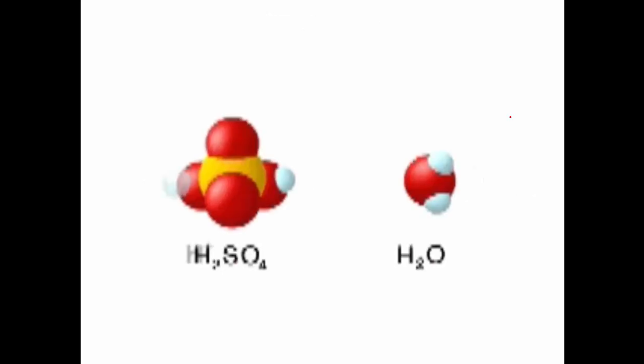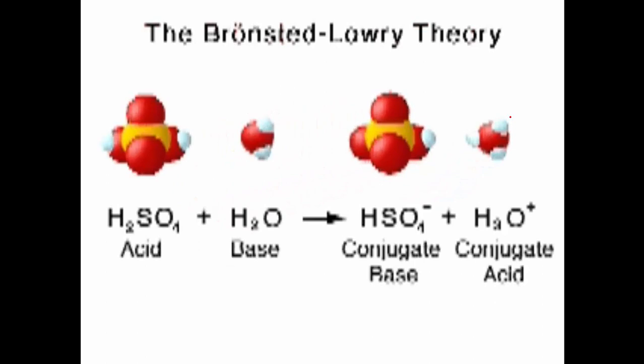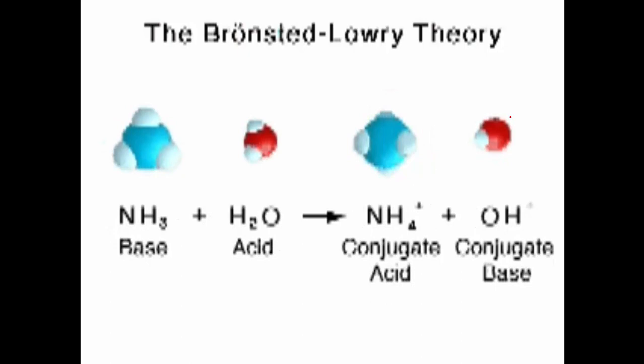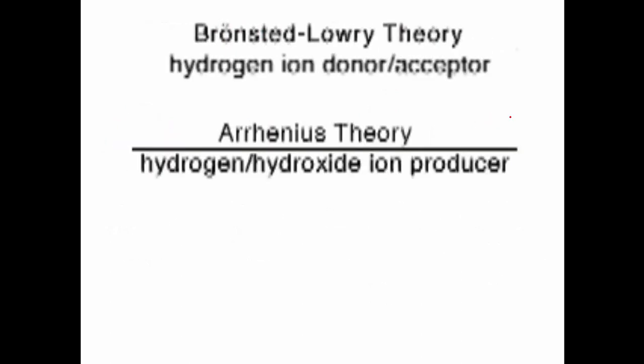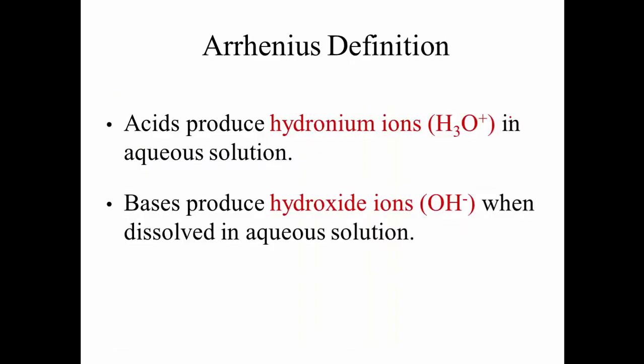As acids and bases were better understood, more general definitions were proposed. The Bronsted-Lowry theory defines an acid as a hydrogen ion donor and a base as a hydrogen ion acceptor. The Bronsted-Lowry theory is more general than the Arrhenius theory. Arrhenius required that you were in a water solution, and it also did not really discuss the mechanism of what that hydrogen ion does.